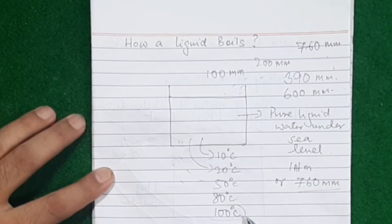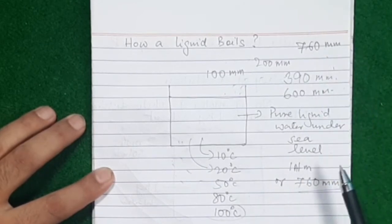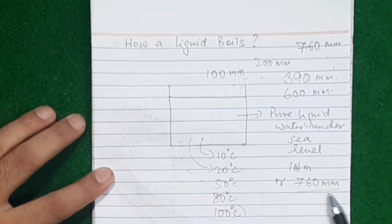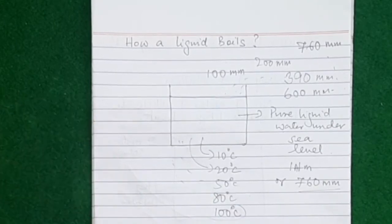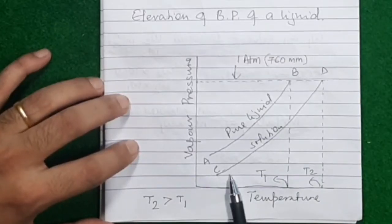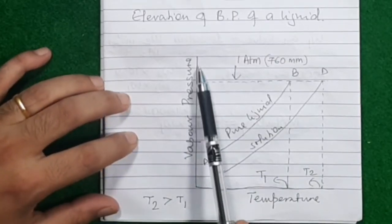You must keep in mind that if a liquid is at its boiling point, its vapor pressure at that point, if the liquid is pure, will always be equal to atmospheric pressure.